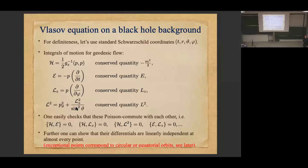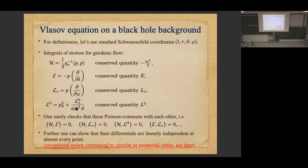Working with standard Schwarzschild coordinates, what integrals of motion do you have for the geodesic flow in Schwarzschild spacetime? First, you have the Hamiltonian itself, corresponding to the conserved quantity −m²/2. You have two Killing vector fields: ∂/∂t and ∂/∂φ, where φ is the azimuthal Killing vector field and t is the asymptotically time-like Killing vector field. Contracting these with p gives two conserved quantities — energy and azimuthal angular momentum — and then you have the total angular momentum as well.